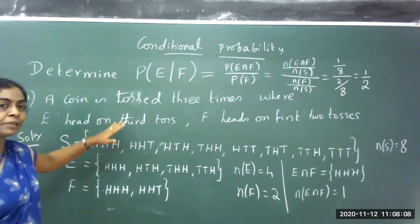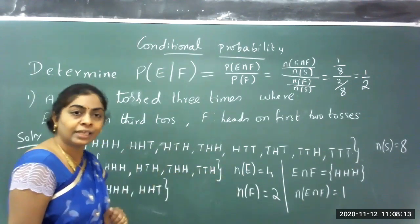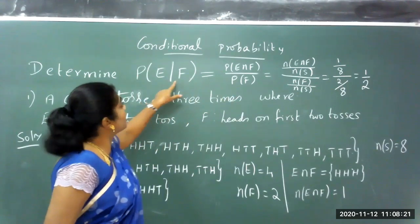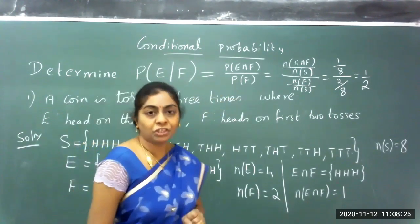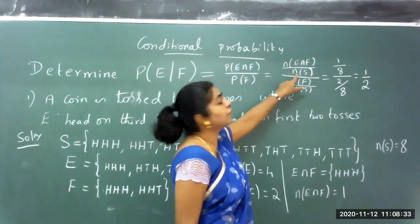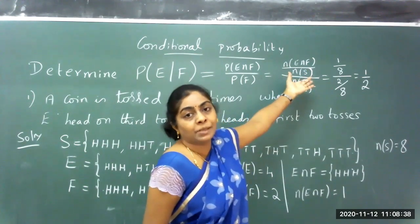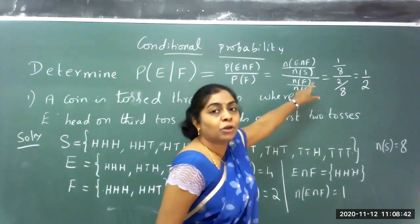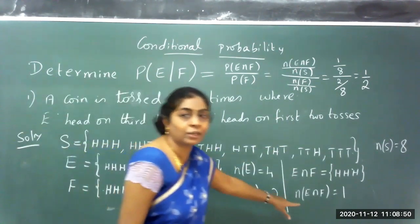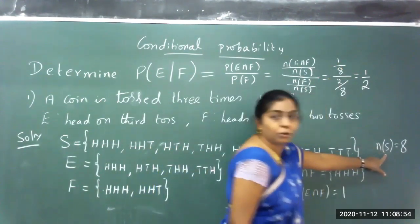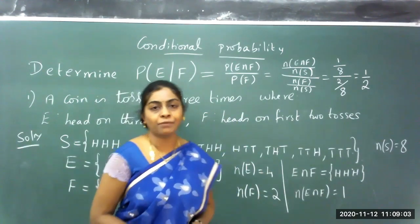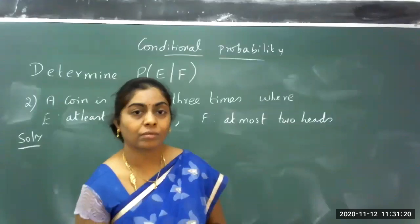So first find the sample space and the two events. After finding the number of elements in each, the conditional probability of E given F is probability of E intersection F divided by probability of F. The probability definition gives number of favorable outcomes divided by total number of outcomes. Substituting: number of elements of E intersection F is 1, divided by sample space 8, all divided by number of elements in F which is 2, divided by 8. The denominators cancel giving 1/2.